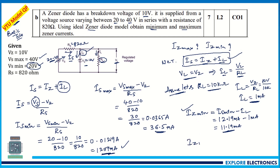Similarly, IZ_maximum = IS_max − IL. IL remains the same since RL is constant. IS_max = 36.5 mA, so IZ_max = 36.5 mA − 1 mA = 35.5 milliamps. This is the maximum current flowing through the zener diode.